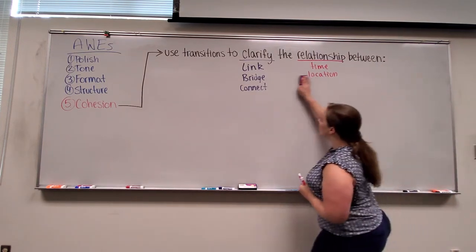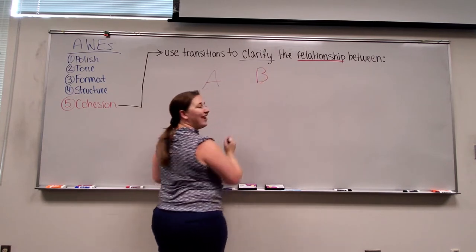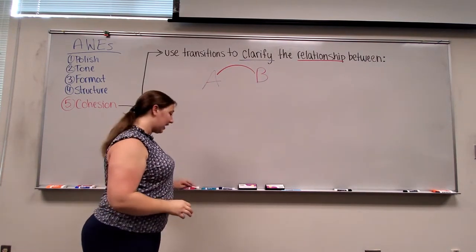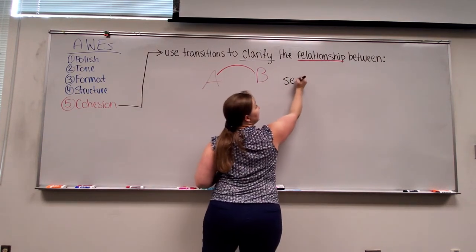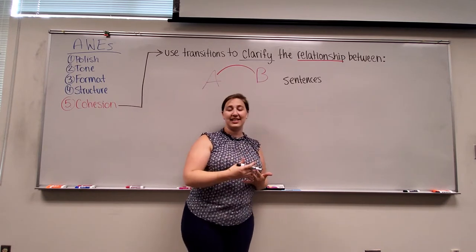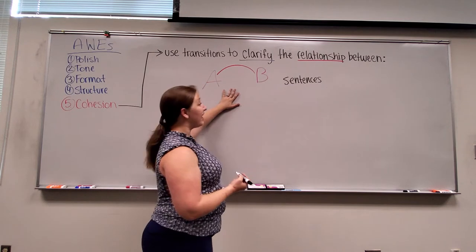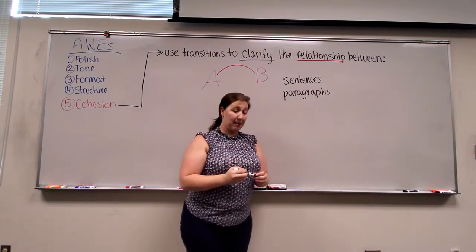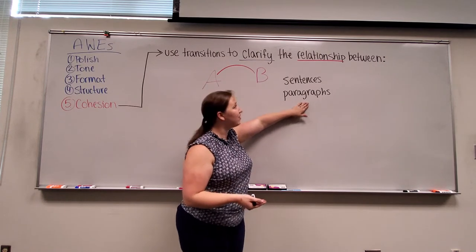When it comes to transitions, we are clarifying the relationship between A and B. Our transition is what comes between A and B. Sometimes A and B are sentences that need connecting — maybe within sentences by using the word 'and' or 'but,' or maybe across sentences by saying 'furthermore' or 'in addition.' Or maybe we are clarifying the relationship between paragraphs, linking them by saying 'the first reason why,' 'the second reason why,' organizing our paragraphs so that they are cohesive and we understand the relationship — one comes after another.